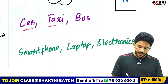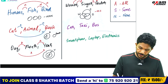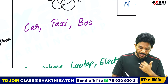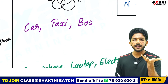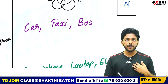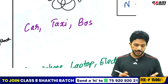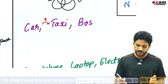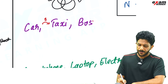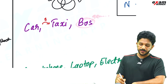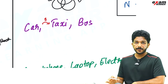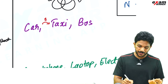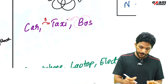Next example: Car, Taxi, Bus. All cars are taxis — so car sits inside taxi. There are many cars. Some taxis may be buses, taxi can come here. Some, not all.